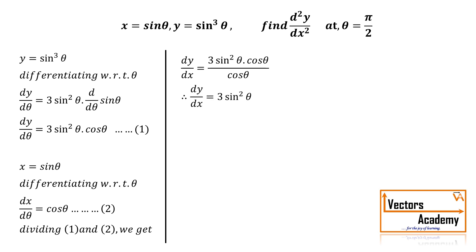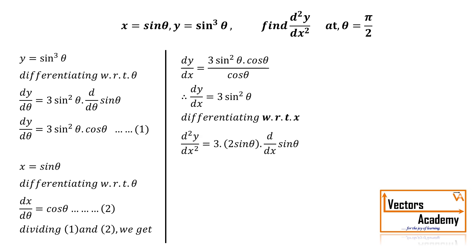Now here is an important part. If we differentiate dy by dx with respect to x, remember we are differentiating with respect to x and not with respect to θ. But our equation is in terms of θ. So the left hand side will be d²y upon dx².